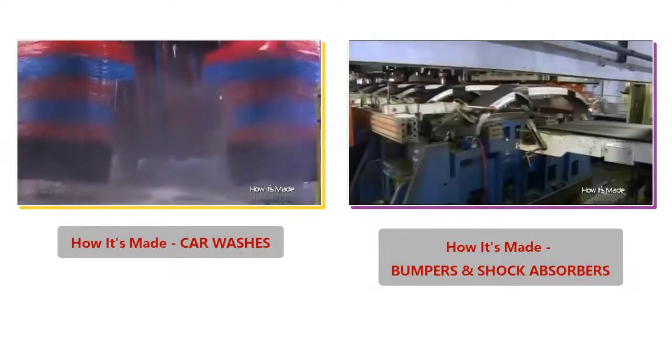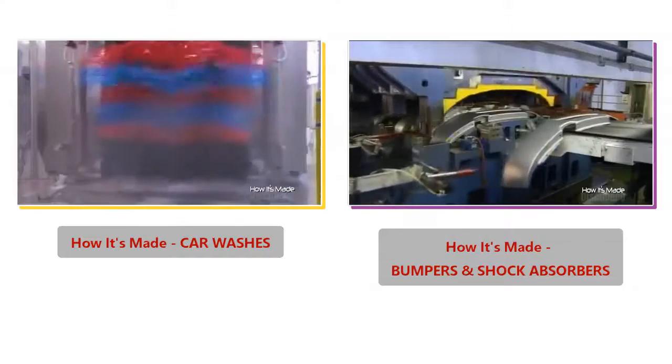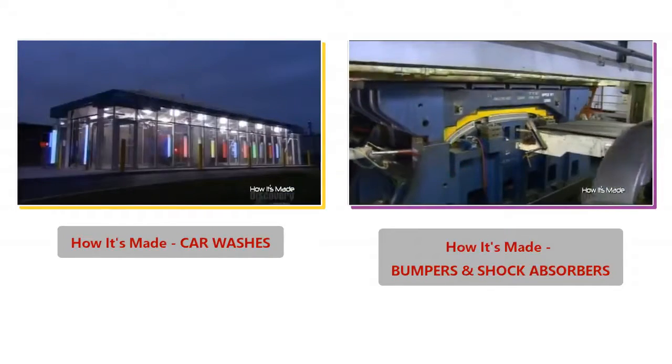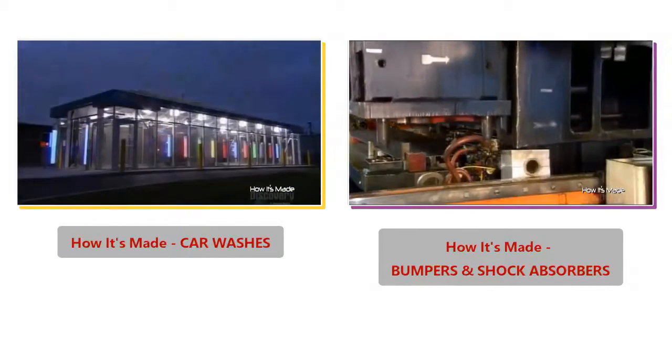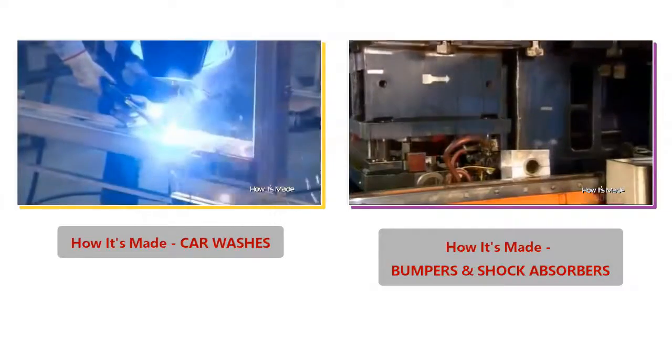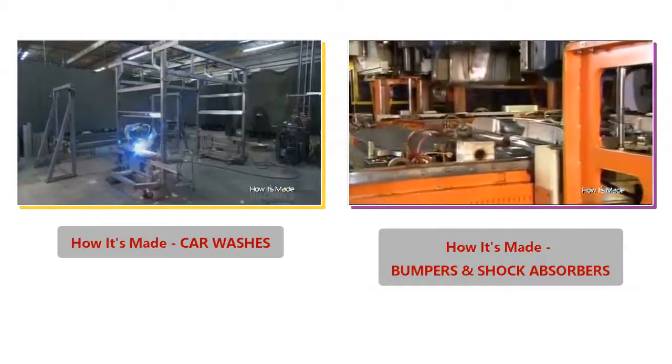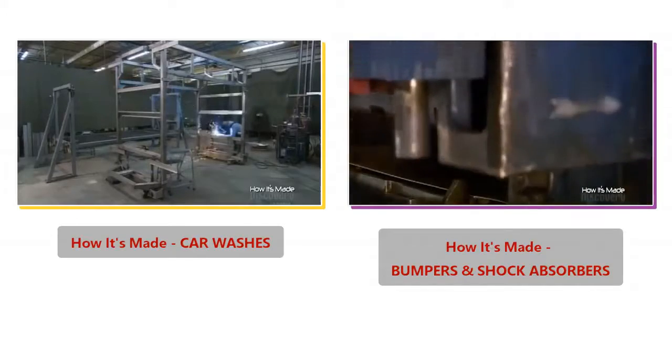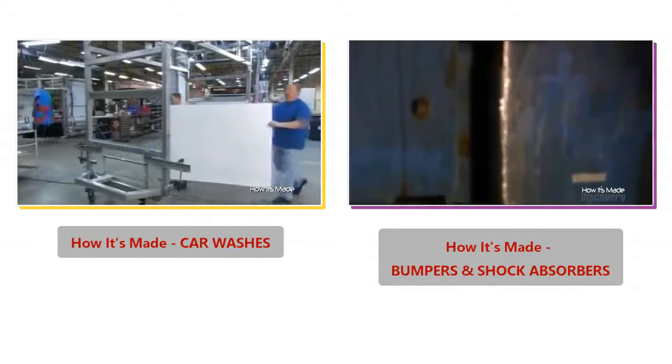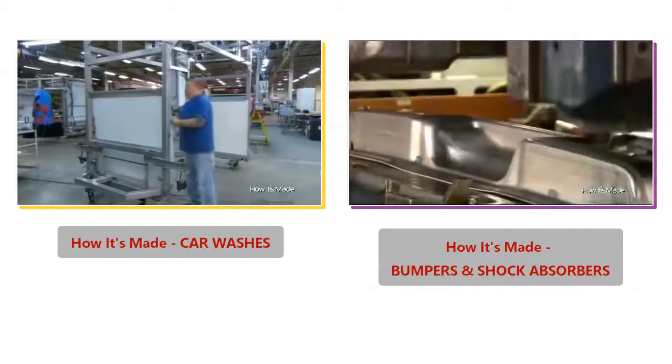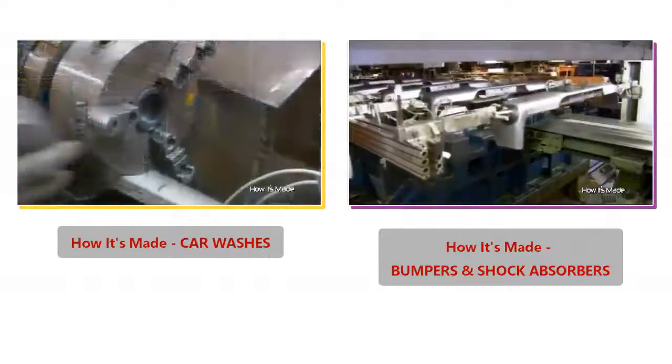Each die stamps the blank to a particular shape using some 2,000 tons of force. This progressively forms the blank into the final bumper shape. Both the front and rear bumpers go through the same process, only the dies are different.